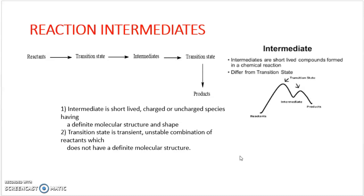Every reaction goes via a transition state and intermediate — that means products are not formed directly. Reactants convert into a transition state, then into an intermediate, and then there is formation of product. A reaction can be a single-step reaction, a two-step reaction, or a multi-step reaction. In any reaction, whether single-step or multi-step, there is involvement of a transition state as well as an intermediate.